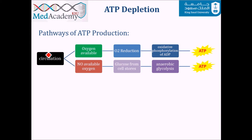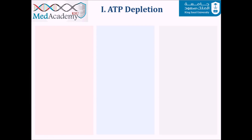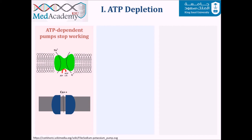When oxygen is lost, three things happen. First, ATP-dependent pumps stop working. The sodium-potassium pump normally keeps sodium outside and potassium inside. With ATP depletion, sodium accumulates inside the cell and drags water with it, causing cellular swelling. The calcium pump also stops working — and calcium influx causes its own cellular damage, which is covered in the next principle.